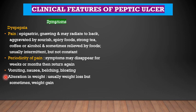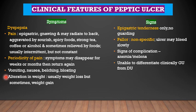There may be alteration in weight — usually weight loss but sometimes weight gain. Among the signs: epigastric tenderness without guarding, and pallor which is non-specific, usually due to slow bleeding from an ulcer. Signs of complications may include anemia and melena. Clinically, it is almost impossible to differentiate gastric ulcer from duodenal ulcer.